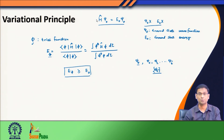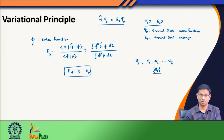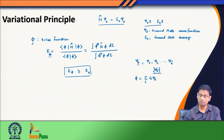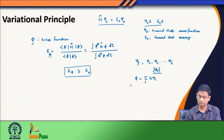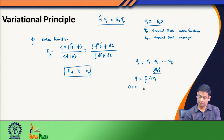Since the Hamiltonian is a Hermitian operator, I know ψᵢ form a complete set. So if ψᵢ form a complete set, no matter what trial function I take — as long as it follows the same boundary conditions — this arbitrary function φ can be expressed as a linear combination of the ψᵢ's. When I do this, I know from earlier discussions that the expectation value of the energy will essentially be Σ |Cᵢ|² Eᵢ.